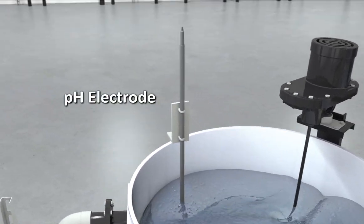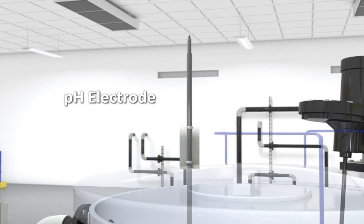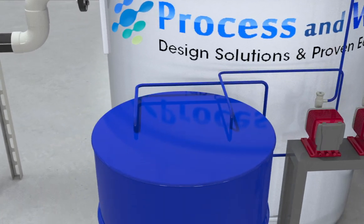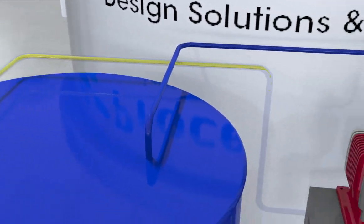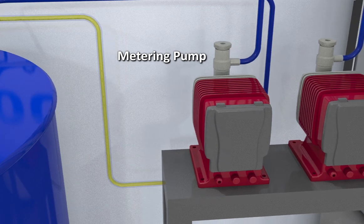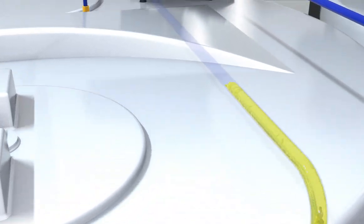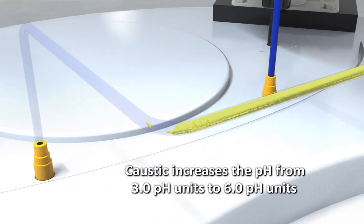The pH electrode senses the pH and displays the results on the control panel. The chemical metering pump dispenses caustic from the first chemical drum through the metering pump to the tank to increase the solution's pH from 3.0 pH units to 6.0 pH units.